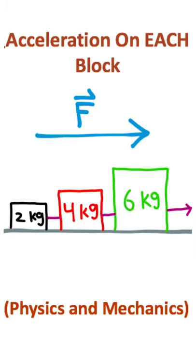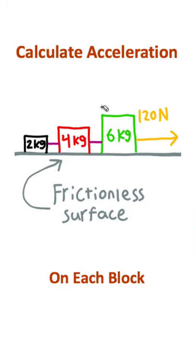So let's talk about solving a situation like this. As you can see, we have three blocks, and they're all attached to each other by some pulley connecting them. They're also moving with a net force of 120 Newtons, and we're on a frictionless surface.